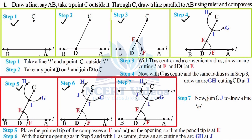All points on line m will be at equal distance from all points on line DA — that is the concept of parallel lines. The key concept here is that while placing the needle on F and opening to E, then placing it at I and opening to J, we were making alternate interior angles equal: angle EDF equals angle ICJ. This is the property of a transversal — if alternate interior angles are equal, the lines are parallel.